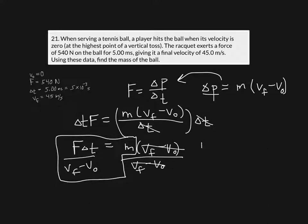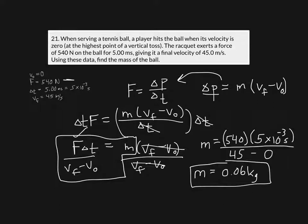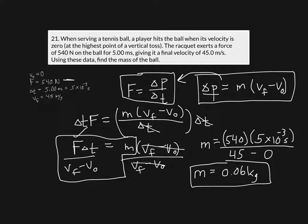All of these values are given, so we can plug in: mass equals 540 newtons times 5 times 10 to the negative 3 seconds, divided by 45 meters per second minus zero. That gives a final mass of 0.06 kilograms. That's how we use the definition of force in terms of momentum and the impulse equation — Δp equals mass times Δv — to find the mass of the tennis ball.